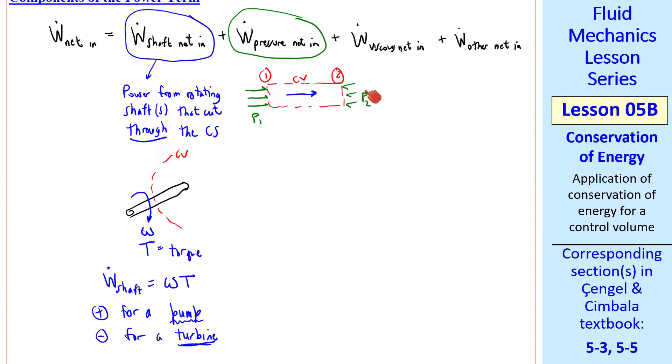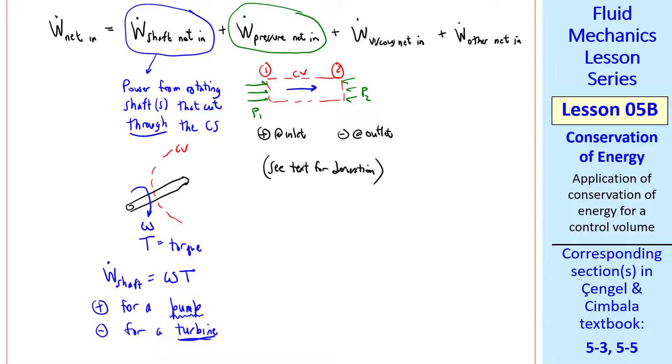So we're adding power to the fluid by this pressure and velocity. At an outlet, you're fighting against the fluid, so the control volume is doing work on you. So this net pressure in power is positive at the inlet and negative at an outlet. See the text for the derivation. Turns out that this term equals negative integral over the control surface P/ρ ρV⃗·n̂ dA. Because of the nature of the dot product, the signs take care of themselves at any inlet or outlet.